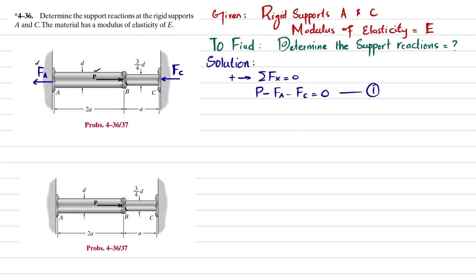Since these are rigid supports, there will be no translatory motion or elongation. The change in length will be equal to zero. We will use compatibility equations and the method of superposition to solve this problem.